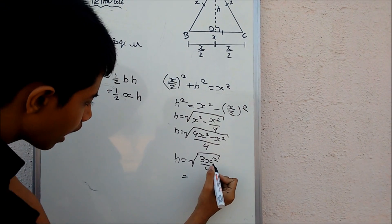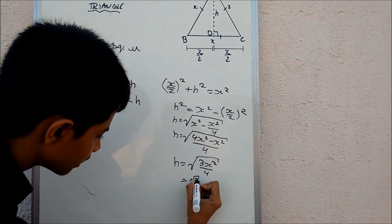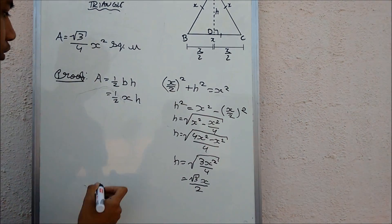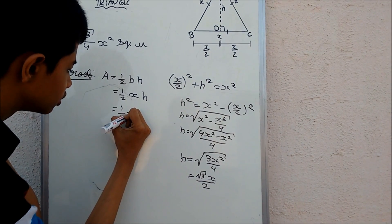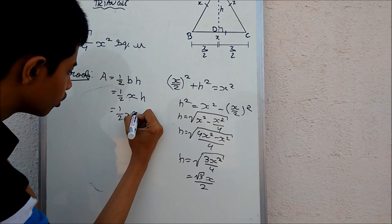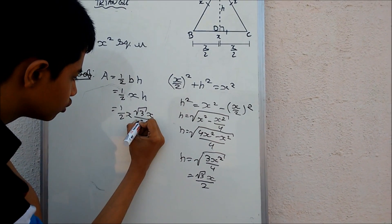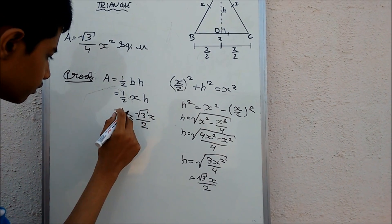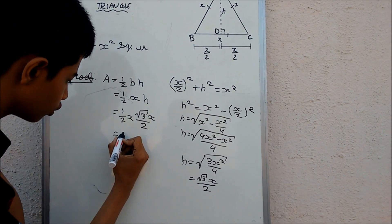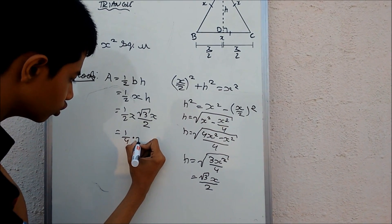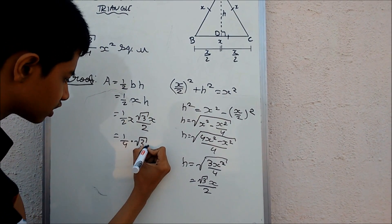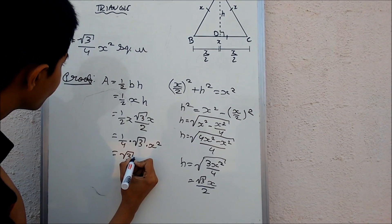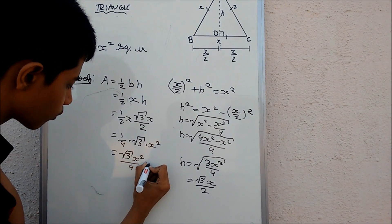Now if we evaluate the radical, I can take root 3 out, take root of x² as x, and root of 4 is 2. So h equals root 3 times x by 2. Now the area equals half times x times h, which is half times x times root 3 x by 2. This evaluates to 1 over 4 times root 3 times x times x, which is nothing but root 3 x squared by 4 square units.